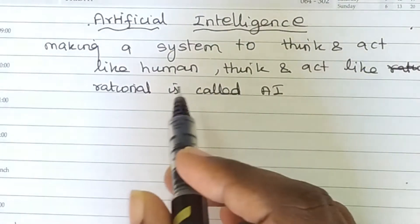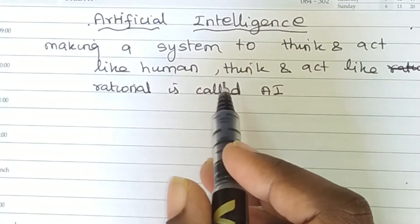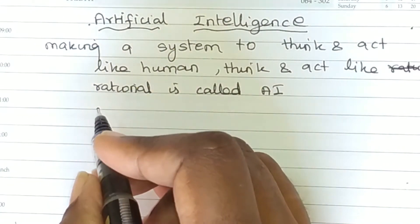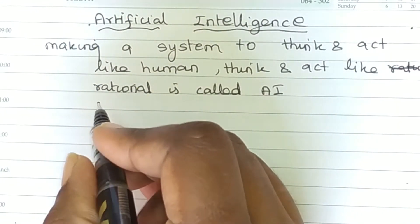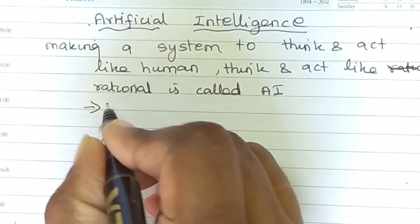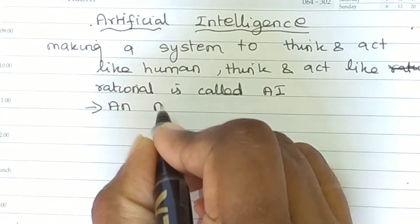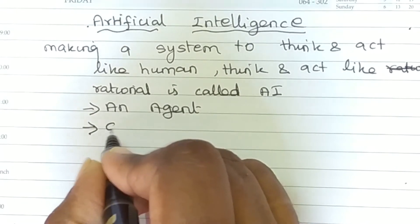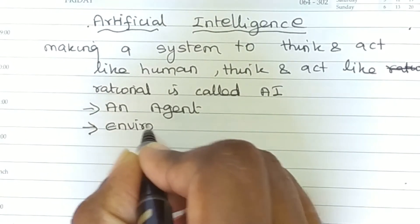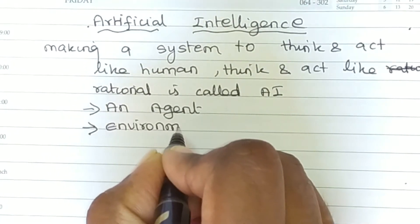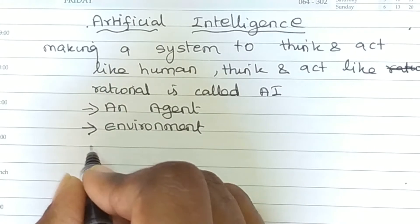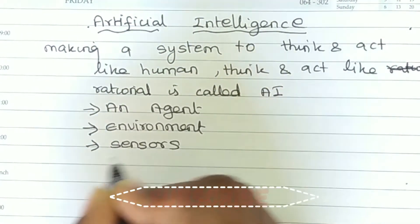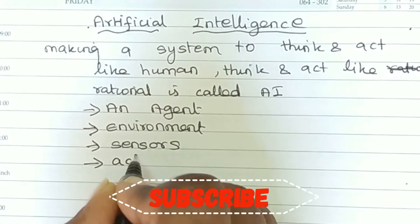In artificial intelligence, we are going to cover four key things. First, we are going to learn about an agent. Second, we are going to learn about the environment. Third, we are going to learn about sensors. Fourth, we are going to learn about actuators.